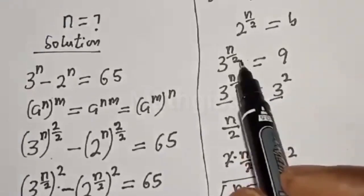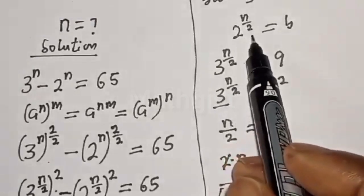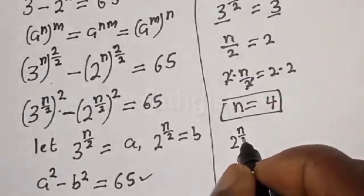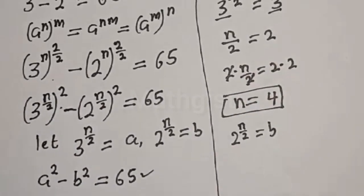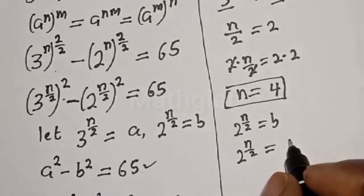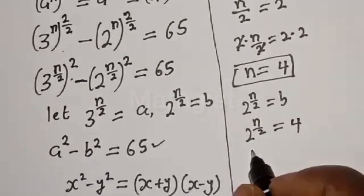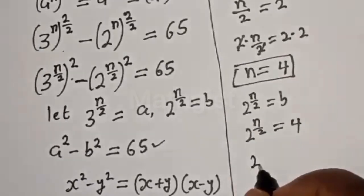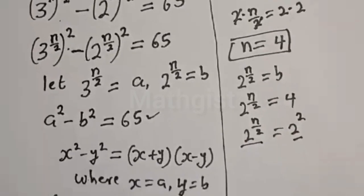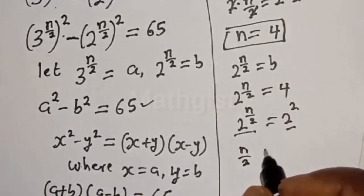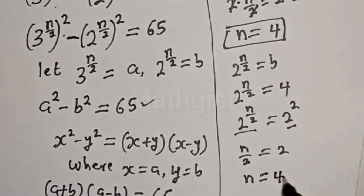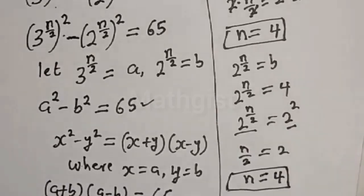We can also verify using b: 2 raised to power n/2 = b = 4 = 2 squared. So n/2 = 2, confirming n = 4. Both substitutions agree, so the value of n is correct.